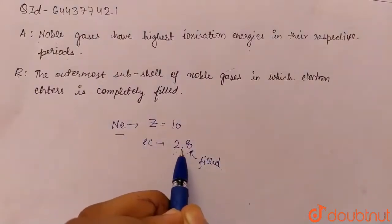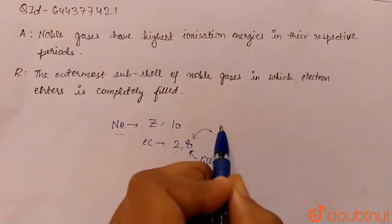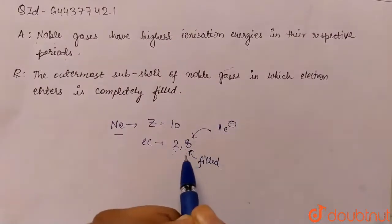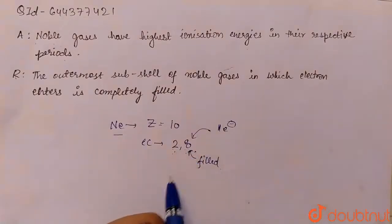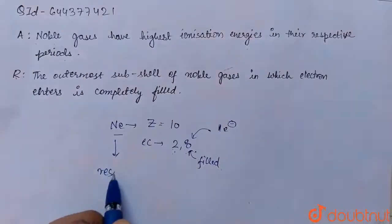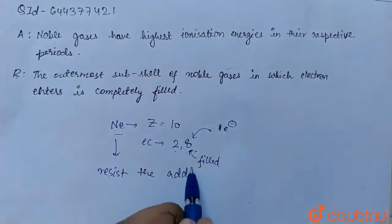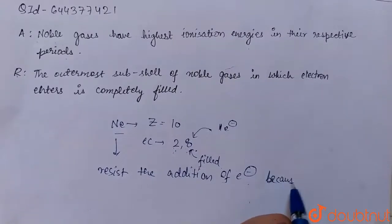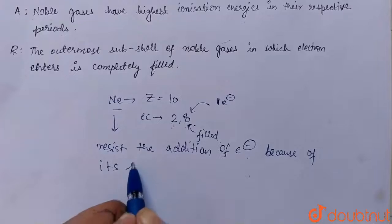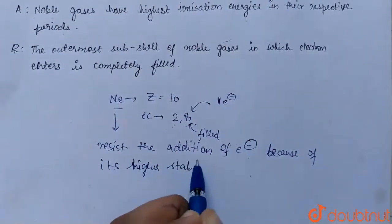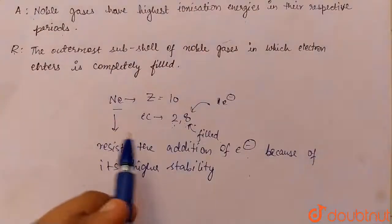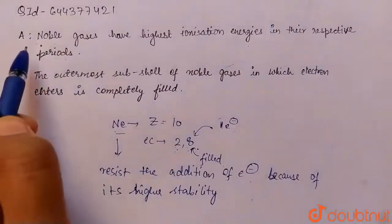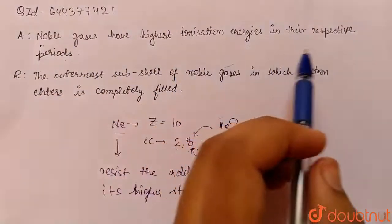In neon, all subshells are filled. If we try to add one more electron, it would enter the next subshell, which is an s subshell. Since this would not complete its octet, it would not be stable. Therefore, neon resists the addition of an electron due to its higher stability, and we have to supply more ionization energy. Thus, due to the stable electronic configuration, noble gases have the highest ionization energy in their respective period. The assertion is correct.